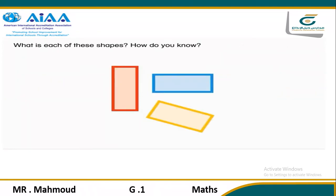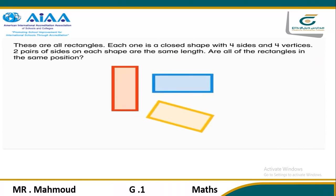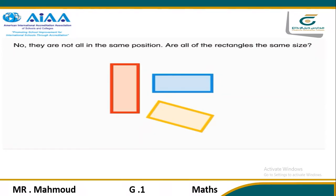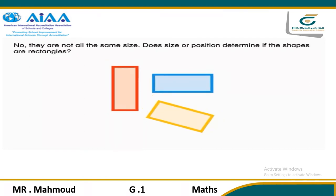What is each of these shapes? How do you know? These are all rectangles. Each one is a closed shape with four sides and four vertices. Two pairs of sides on each shape are the same length. Are all of the rectangles in the same position? No, they are not all in the same position. Does size or position determine if the shapes are rectangles? No.